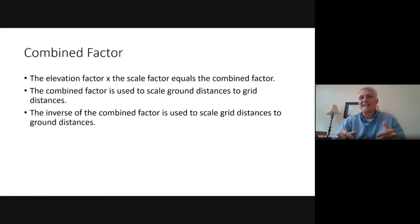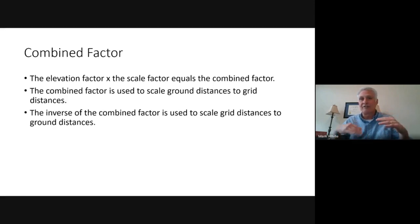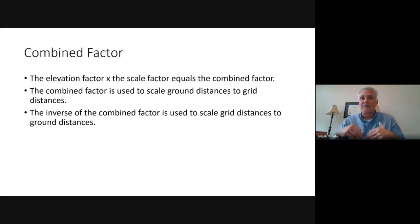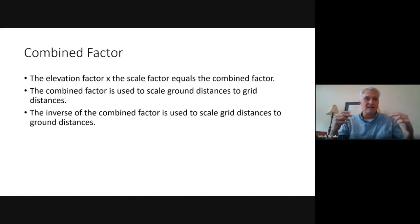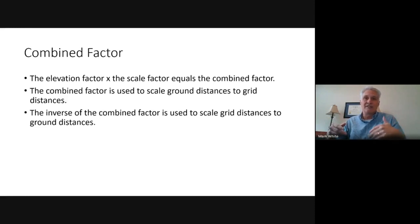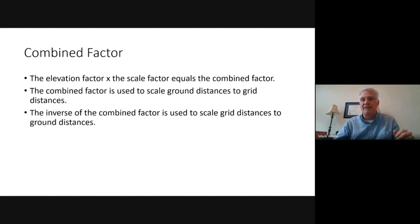If we take the elevation and scale factor and multiply them together, we get what's referred to as a combined factor. That combined factor takes us all the way from ground distances down to grid distances. What we use in TBC and in Access is actually the inverse of the combined factor, which scales grid distances up to ground distances. When we set our coordinates up in a state plane grid or UTM and collect survey data in grid coordinates but want an actual ground measurement, we use the local site settings in TBC and Trimble Access to scale those to ground.